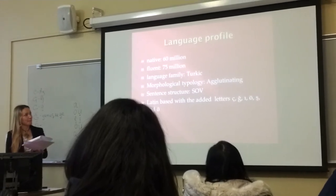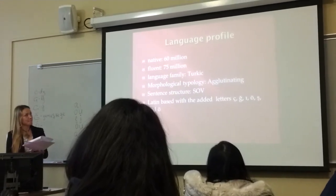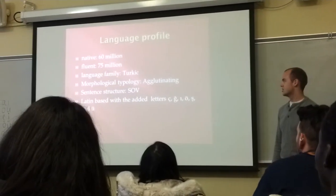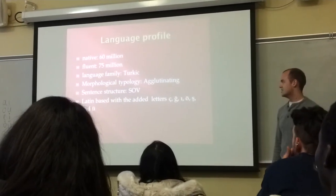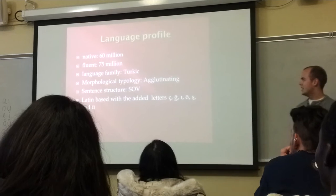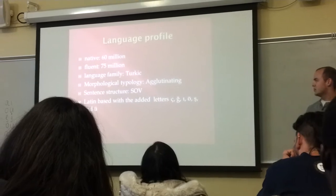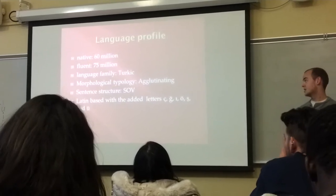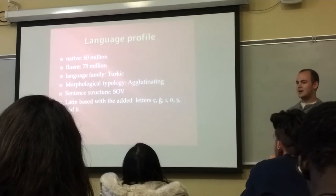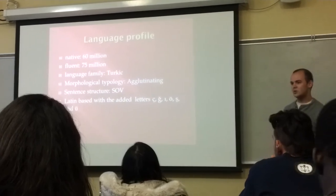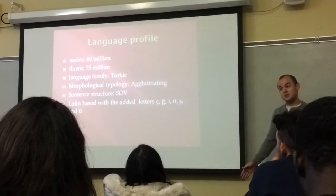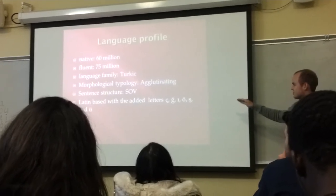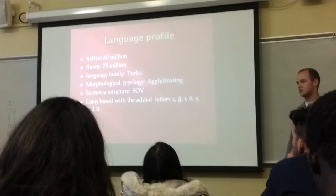There are 60 million native speakers and 75 million global speakers of Turkish. It's in the Turkic language family. It's agglutinating, just like English. It has a subject-object-verb structure, and it has switched to a Latin-based alphabet — basic letters that are in English, plus six characters specific to Turkish.